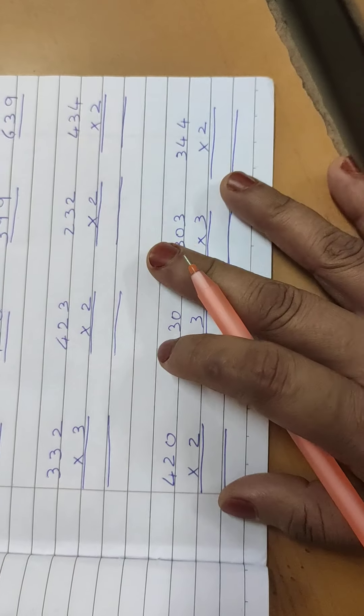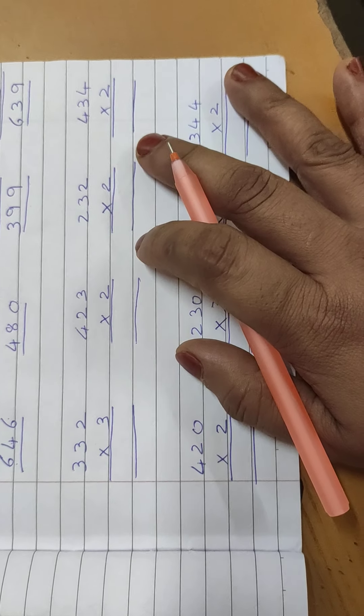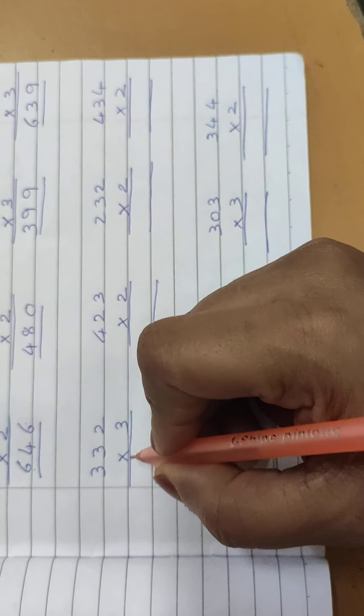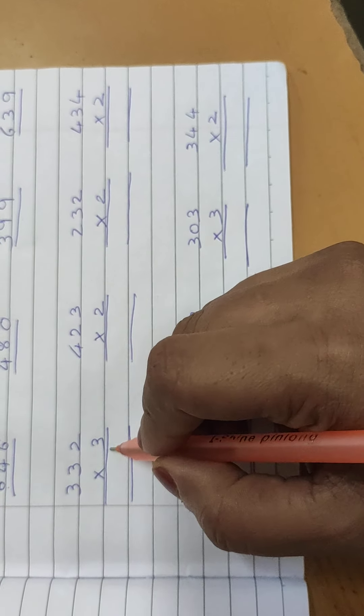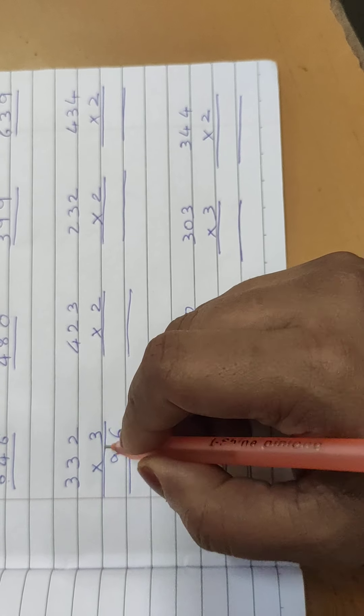So these sums I've given you to do yourself in the worksheet. Here I'll show you by doing them so you have an idea. Look here 332 multiply by 3 is written. 3 twos are 6, 3 threes are 9, 3 threes are 9.